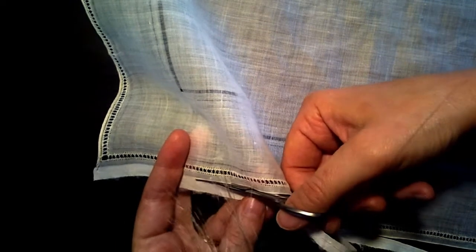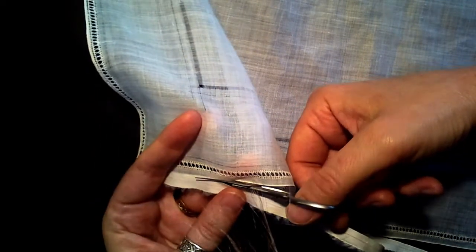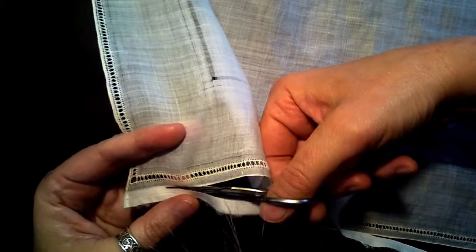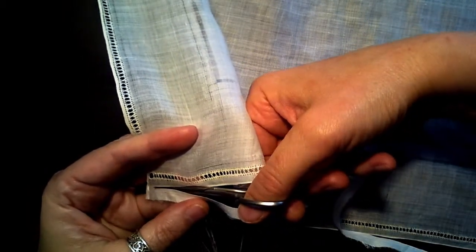The starch acts like a fray check and keeps the edge from unraveling when you're turning your hem.